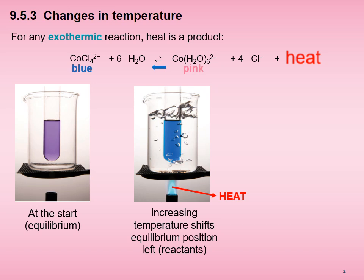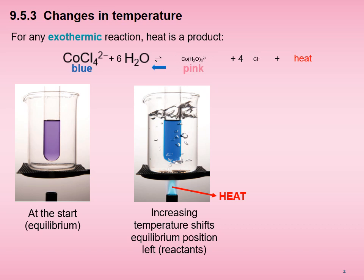It tries to oppose the change by subtracting the heat. Its way of removing the heat is to use up some of the extra heat energy supplied to break the bonds between the cobalt(2+) ion and water molecules in the pink hexa aqua cobalt(2+) ion, and make cobalt(2+) ion react with chloride ions to form the blue tetrachlorocobaltate(2+) ion. Thus, the position of equilibrium shifts left. At its new equilibrium, there are more of the blue tetrachlorocobaltate(2+) ions and less of the pink hexa aqua cobalt(2+) ions. Kc also becomes smaller.